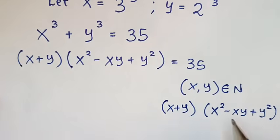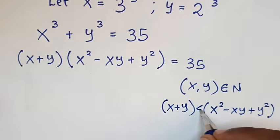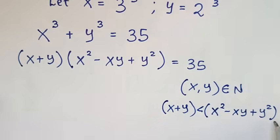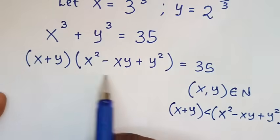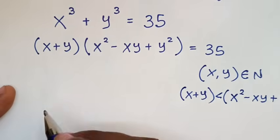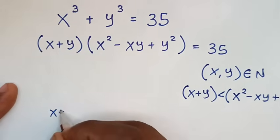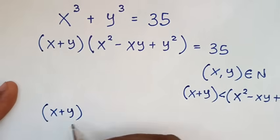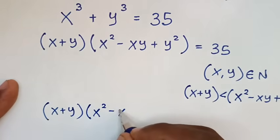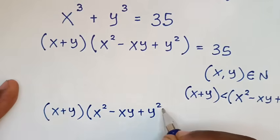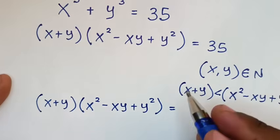Now here, x square and y square are in square, and we compare x plus y with x squared minus xy plus y squared. We can notice that the first number is less than the second number.